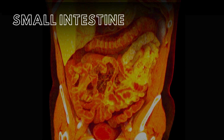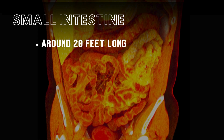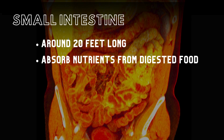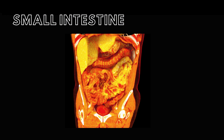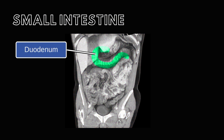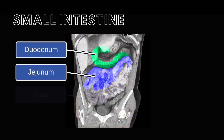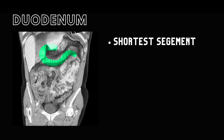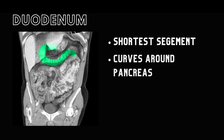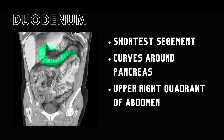The small intestine, averaging 20 feet in length, mainly functions to absorb nutrients from digested food. Its three segments are the duodenum, jejunum, and ileum. The duodenum, the shortest segment, curves around the pancreas in the upper right abdomen.